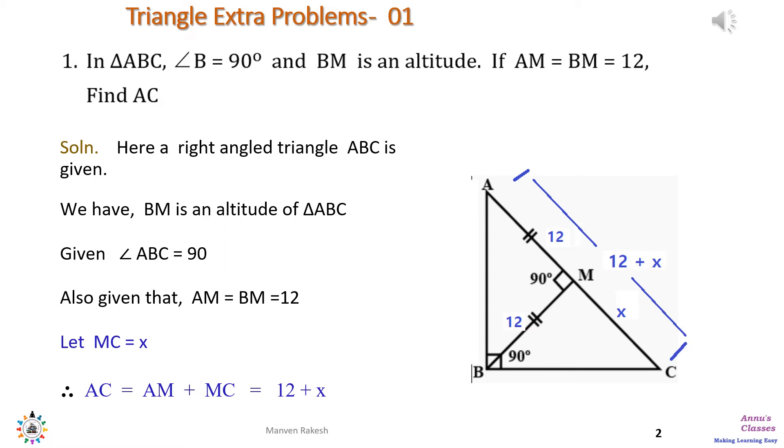It says in triangle ABC, angle B is equal to 90 degrees and BM is an altitude on the hypotenuse. If two parts AM and the altitude BM are equal to 12, find the length of the hypotenuse AC.